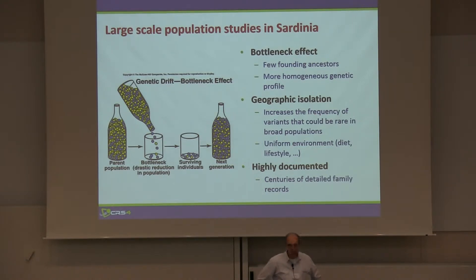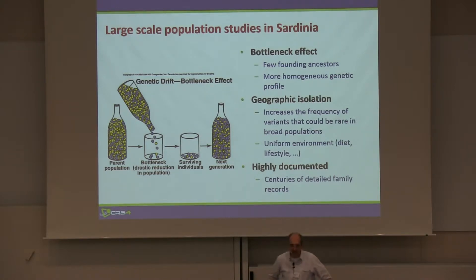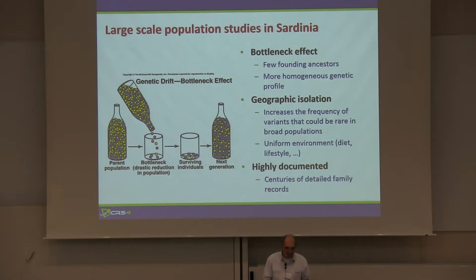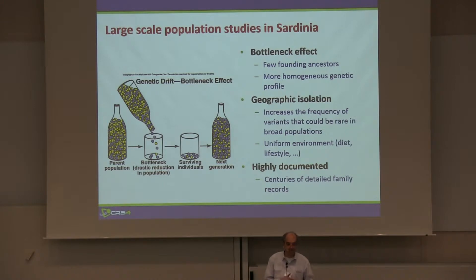Sardinia has what is called a bottleneck effect in its population, somewhere about 7,000 years ago or so. There has been a drastic reduction in the population, and that resulted in a population deriving from few founding ancestors, which has a more homogenous genetic profile.